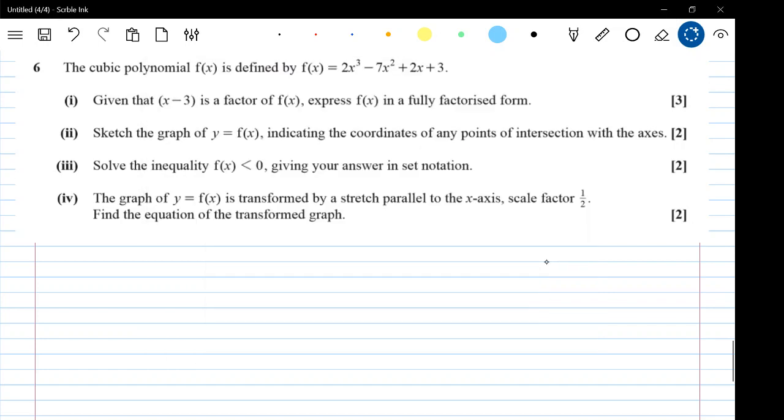Right, so question 6. The cubic polynomial is defined by 2x cubed minus 7x squared plus 2x plus 3. Given that x minus 3 is a factor, express it in fully factorised form.